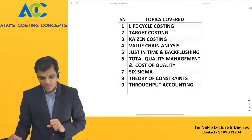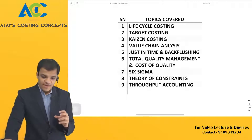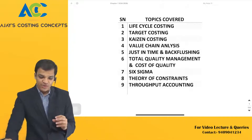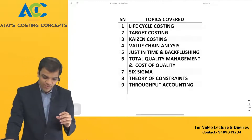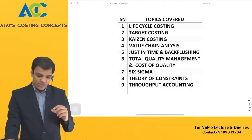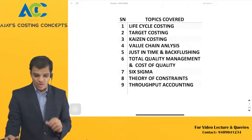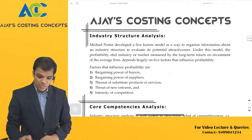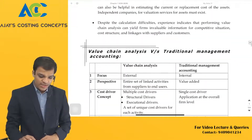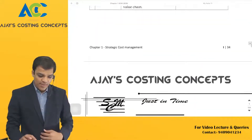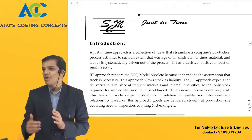After life cycle costing, as per our material, we have target costing, kaizen costing, value chain analysis, just-in-time, and backflushing. Today, before we start with the other topics, let us start with just-in-time first — again one of the small topics which is important and will be helpful for your understanding. I am making sure that the small topics are finished first so that you have a better grip.